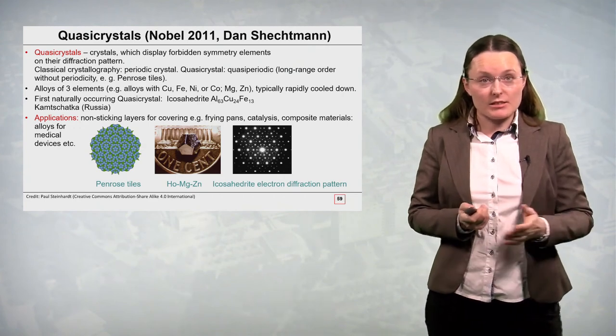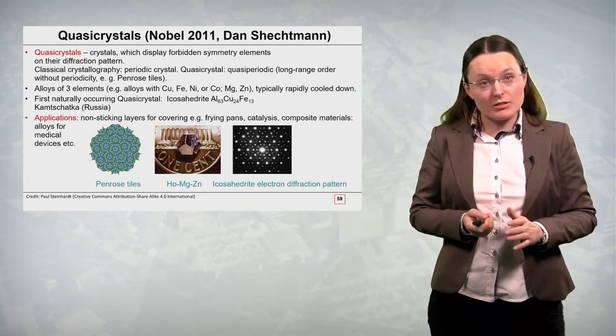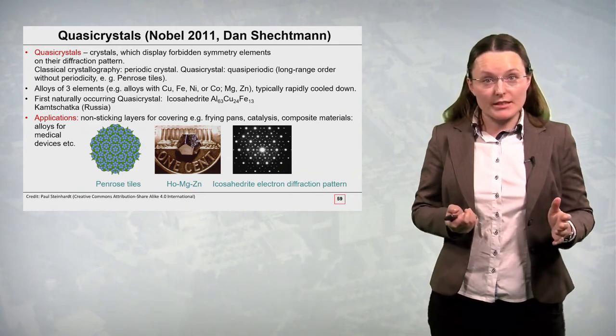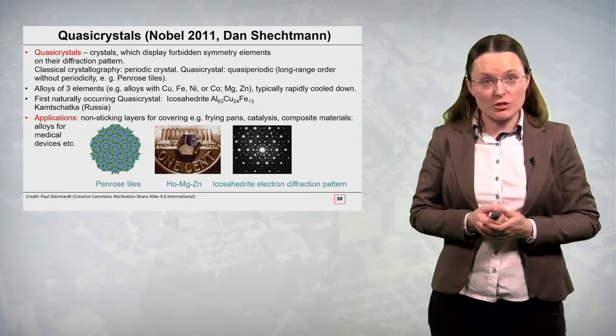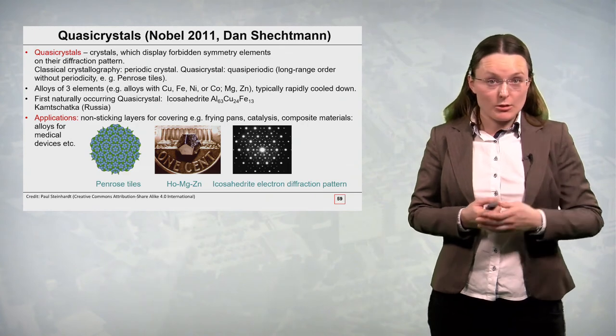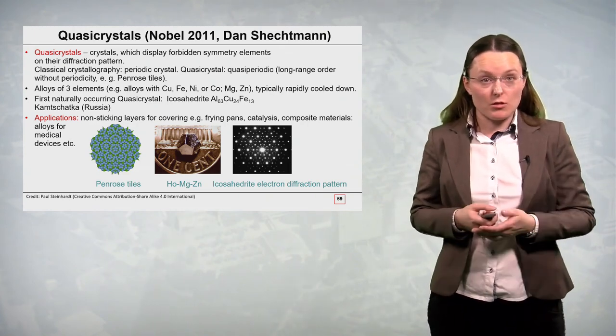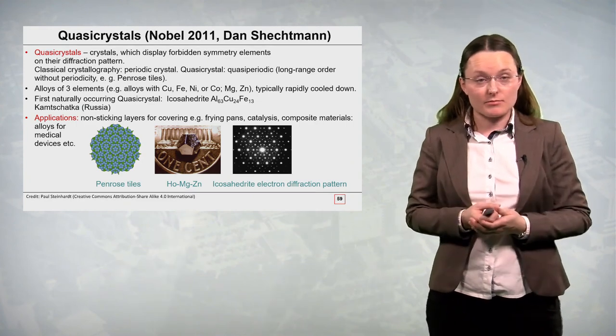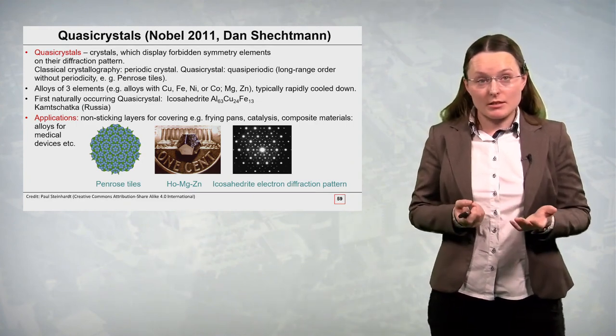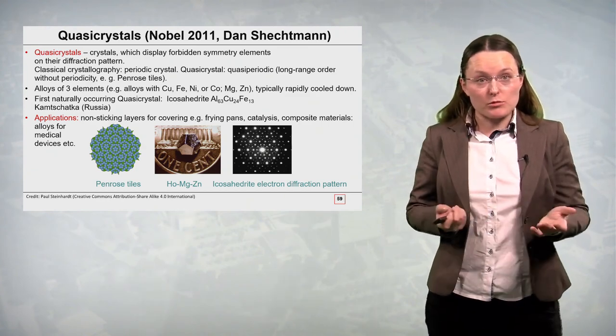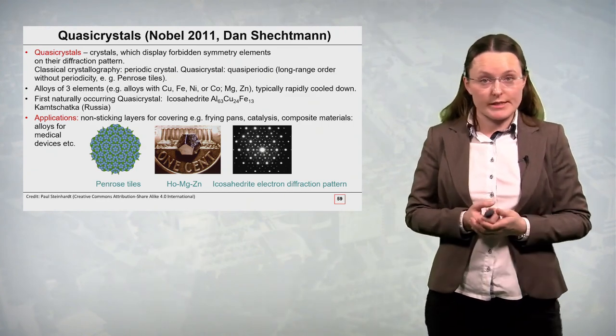Then we have another example of a non-standard case in X-ray diffraction analysis. These are quasi-crystals. Quasi-crystals are crystals which display the forbidden symmetry elements on their diffraction pattern. So these forbidden symmetry elements could be the five-fold or eight-fold symmetry axis. We showed that these kind of symmetry elements are incompatible with a classical periodic crystal.